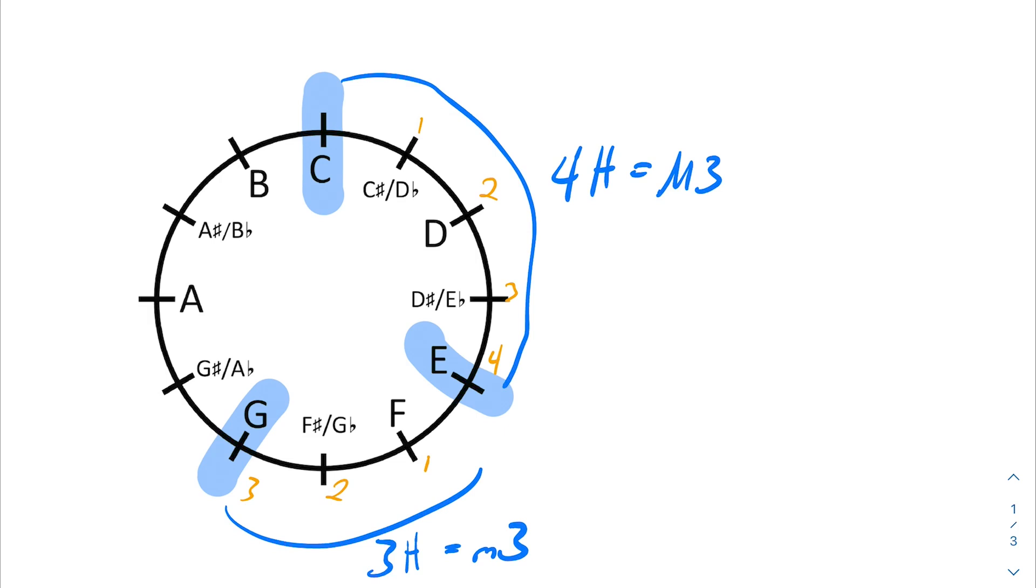Same kind of thing. If we go from the E to the G, we might count up 1, 2, 3. There's 3 half steps, and that is the same as your minor third. You can see the 3 half steps from the minor third and the 4 half steps from the major third, if we add those up together, those 7 half steps are the same as the perfect fifth. And you can see the opposite of the perfect fifth would be your perfect fourth.